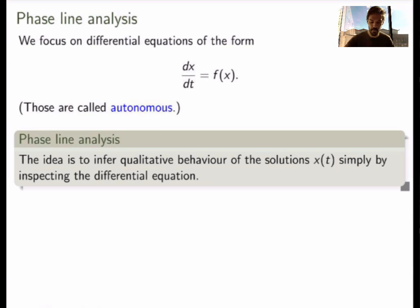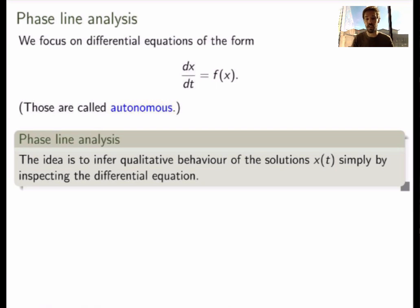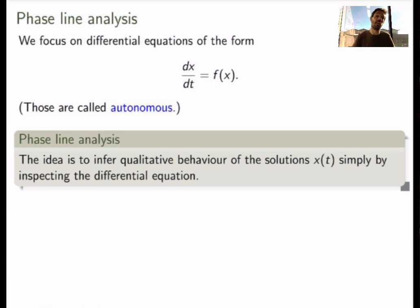We're going to focus on a very special type of differential equations called autonomous equations. The key point is that the right-hand side only depends on x, so there's no dependence on the variable t. This is a special class, but as we saw in class, there are many problems in physics and biology that can be modeled with equations of this form, so it's an interesting class to study.